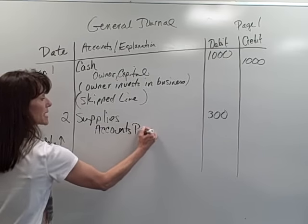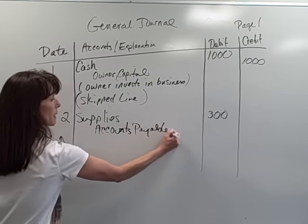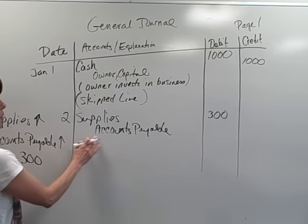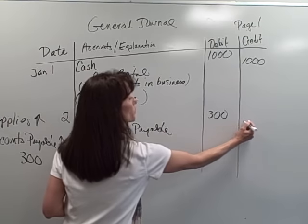Now again, I try not to abbreviate because I don't want to make anybody else confused as to what account I'm using. So I'm crediting accounts payable for $300.